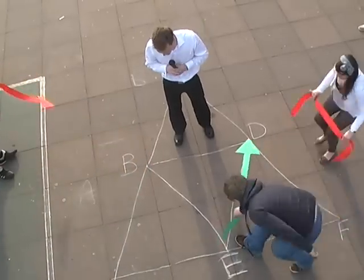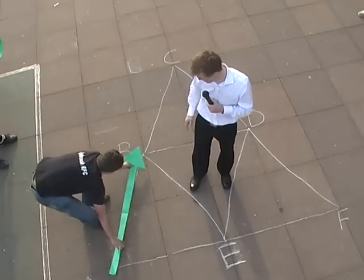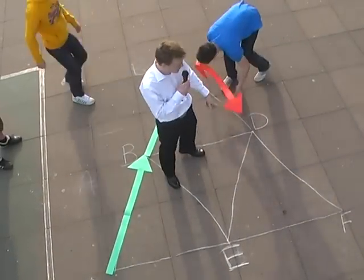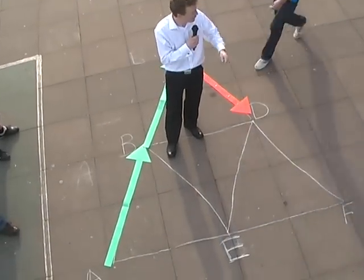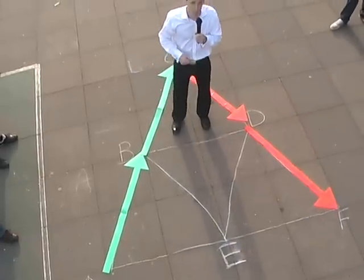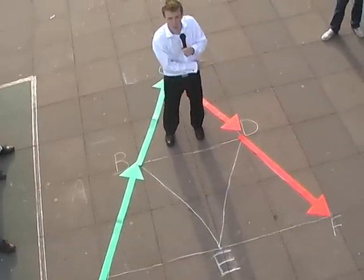Or we could describe AB, BC, CD, and DF. Same pathway, start to finish us at the same place. Two greens, two reds.